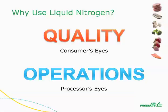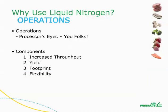I like to categorize the benefits for using liquid nitrogen in food processing into two buckets: quality and operations. In this part, we'll outline the operations benefits. In Part 2, we reviewed the quality benefits. The operations benefits are from the processor's point of view versus from the consumer's point of view for the quality benefits. This is you and your facility. Within operations, the benefits to using liquid nitrogen for cooling and freezing are increased throughput, yield, footprint, and flexibility. We will discuss each of these in turn.